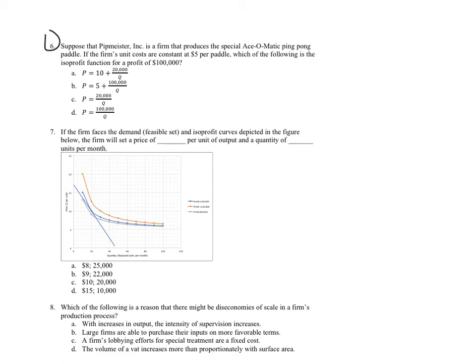All right, number six was one where several teams had a problem, and let's think about this. Suppose that Pipmeister Incorporated, pips are the little dots on a ping pong paddle, is a firm that produces the special asymptomatic ping pong paddle.